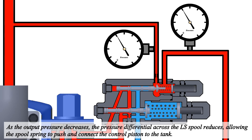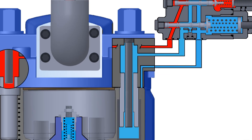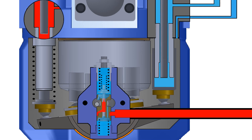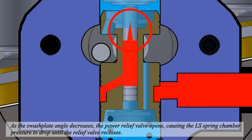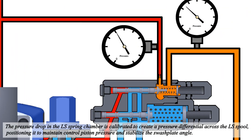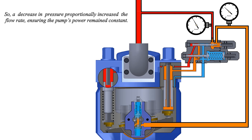Now let's decrease the output pressure. As the output pressure decreases, the pressure differential across the LS spool reduces, allowing the spool spring to push and connect the control piston to the tank. When the control piston pressure drops, the bias piston pushes the swash plate, increasing its angle. As the swash plate angle increases, the power relief valve opens, causing the LS spring chamber pressure to drop until the relief valve recloses. The pressure drop in the LS spring chamber is calibrated to create a pressure differential across the LS spool, positioning it to maintain control piston pressure and stabilize the swash plate angle. A decrease in pressure proportionally increases the flow rate, ensuring the pump's power remains constant.